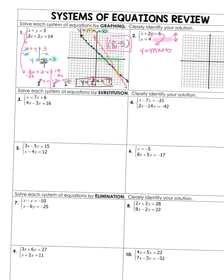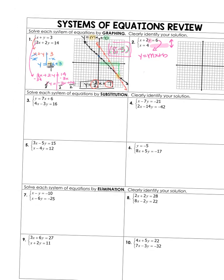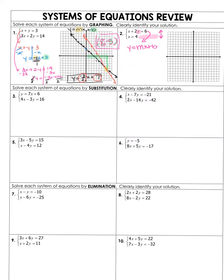Problems 3, 4, 5, and 6 all want us to use substitution. On number 3, it says y equals 7x plus 6 and 4x minus 3y equals 16. Right off the get-go, I know what y equals — y equals 7x plus 6. So I can substitute that in for y into the other equation. I'll have 4 times x minus 3, and instead of writing y, I substitute what y equals: 7x plus 6. And it equals 16. Now I have an equation with all x's, so I know how to solve that to figure out what x is.